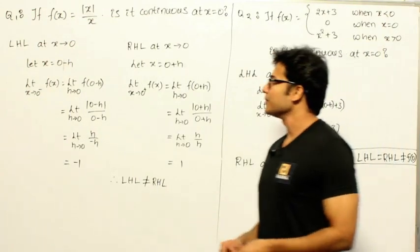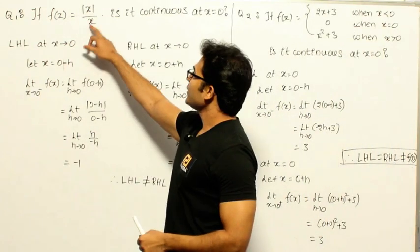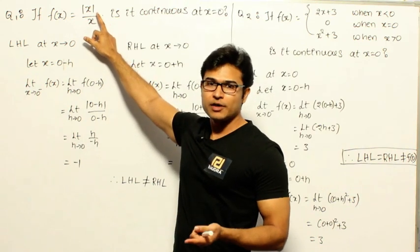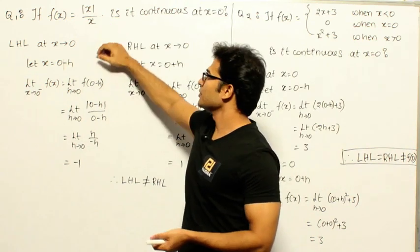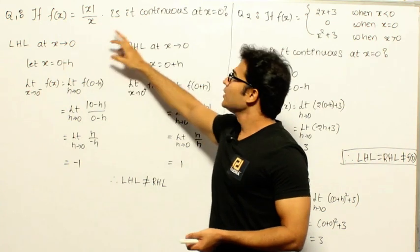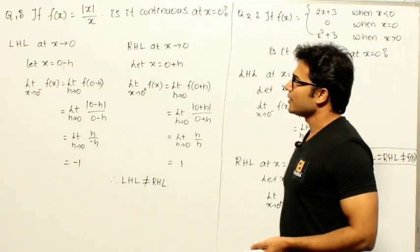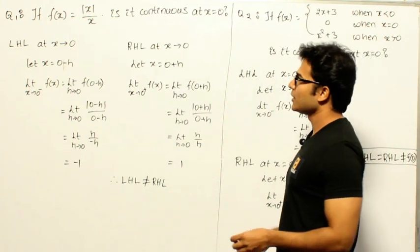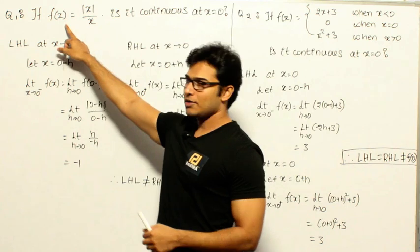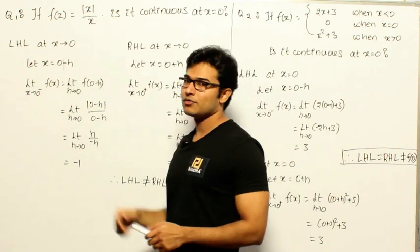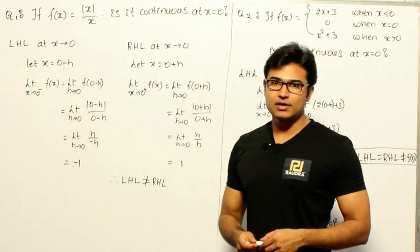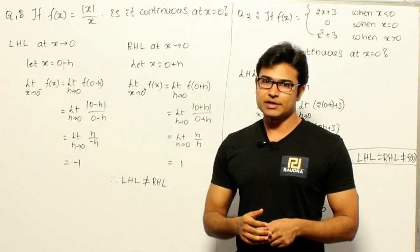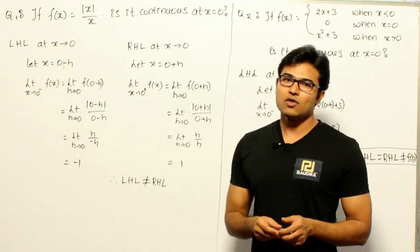Let's look at examples on continuity. If f(x) is given as |x|/x — and recall that mod of x gives a positive number for negative inputs — is it continuous at x = 0? One way to check: if you directly substitute x = 0, you get f(0) = 0/0, which doesn't exist. Whenever you get 0/0 or ∞/∞, you can directly say it doesn't exist and conclude it is not continuous.